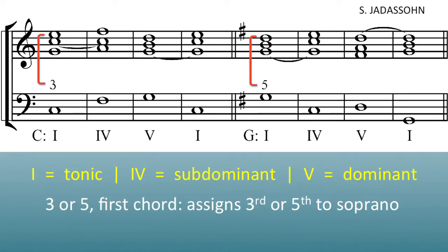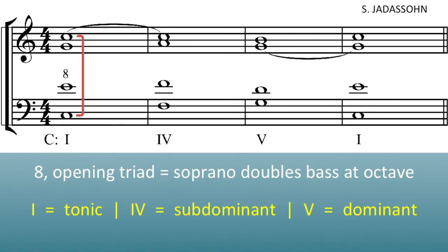Over just the first bass note of each section, we now add a few Arabic figures — three and five — to indicate whether the top voice starts with the third or the fifth of the opening triad. When the soprano doubles the bass at the octave or double octave, the Arabic figure eight can be added above the first bass note, if necessary.